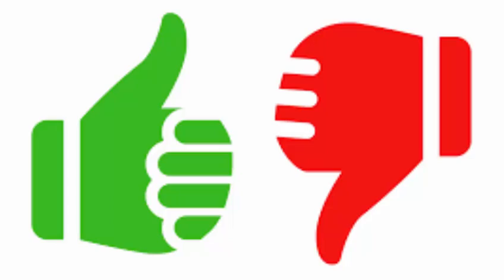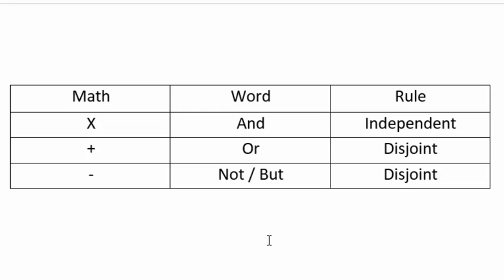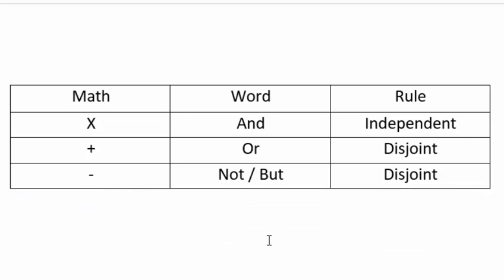Now the addition rule: we use the word OR. What is the probability you make an A or a B in statistics? These events need to be disjoint — if A happens, B cannot happen — so we can simply add together the probabilities. There's no overlap. Anytime you hear 'or,' think addition, and check that the events are disjoint.